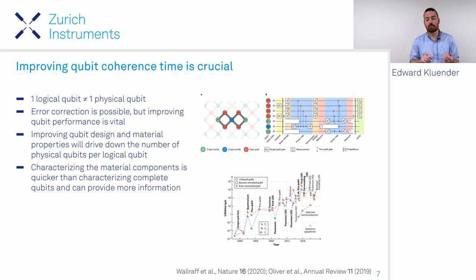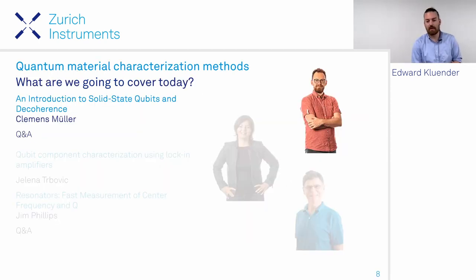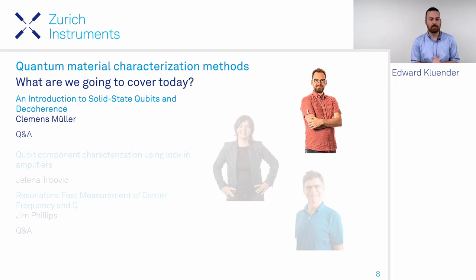Material components are easier to characterize and fabricate, so you can increase throughput. Additionally, by isolating material components you gain more information, as you can isolate the causes of decoherence. With that, I'll hand it over to Clemens for the first section on solid state qubits and their causes of decoherence.